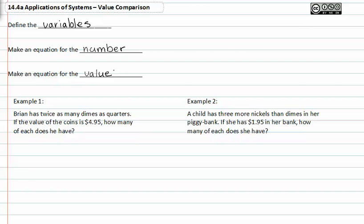In example one, Brian has twice as many dimes as quarters. If the value of the coins is 495, how many of each does he have? We know he has dimes, and we know he has quarters.